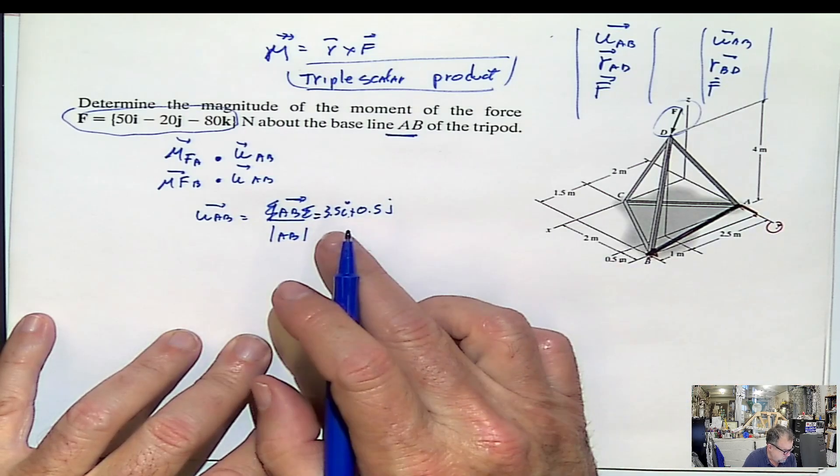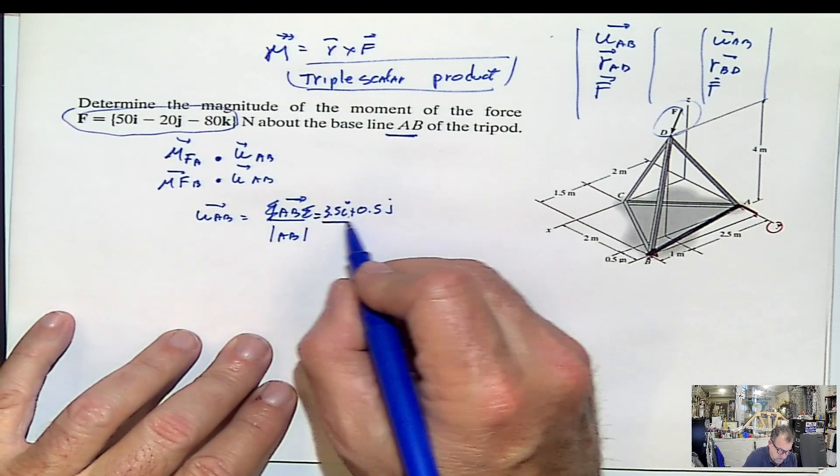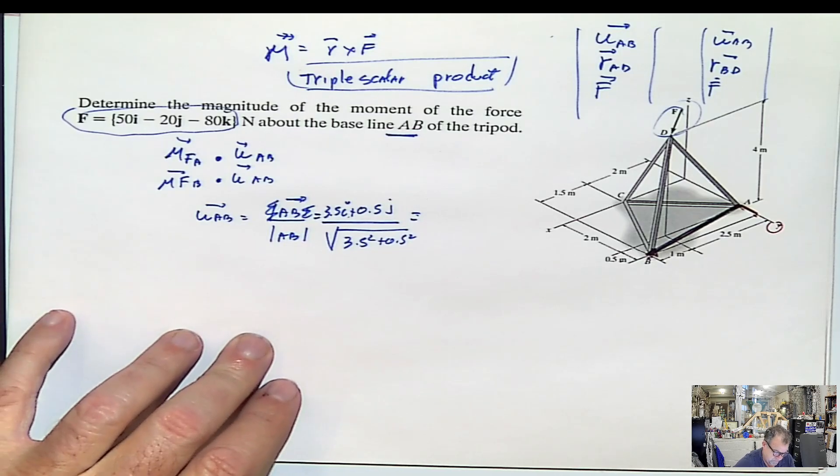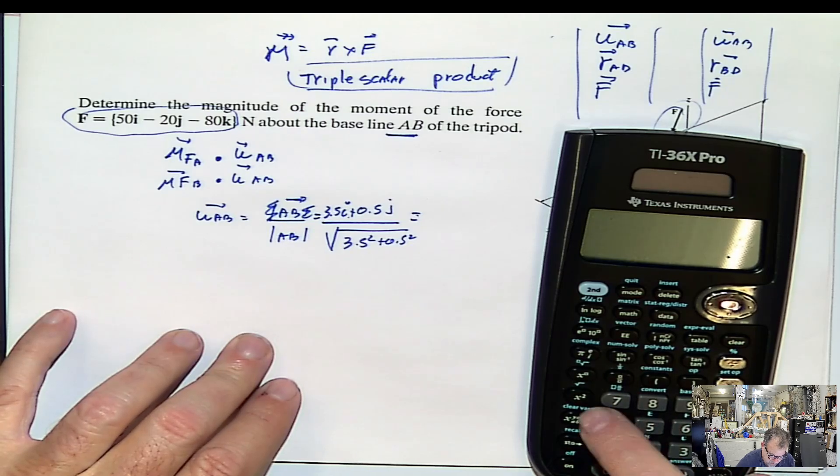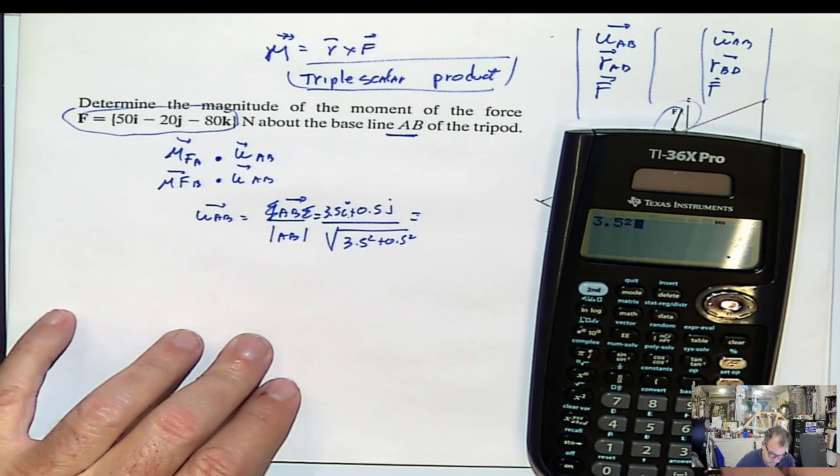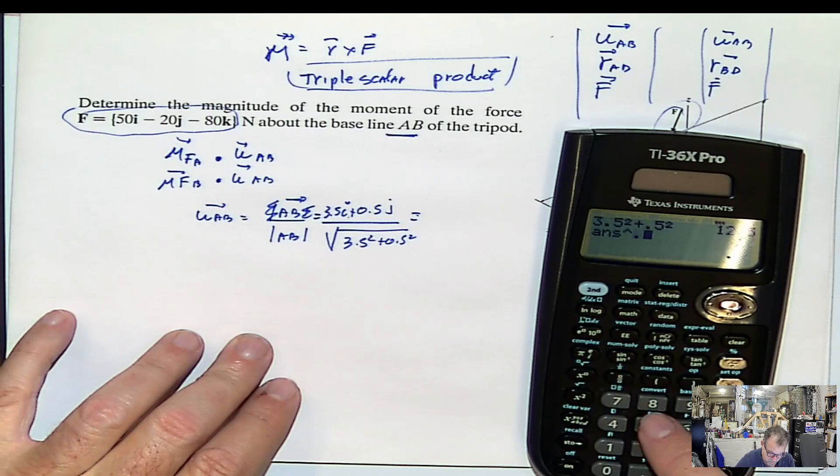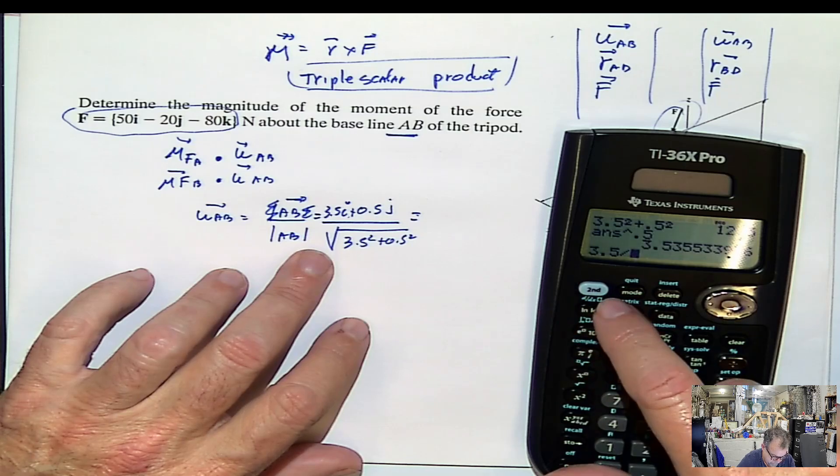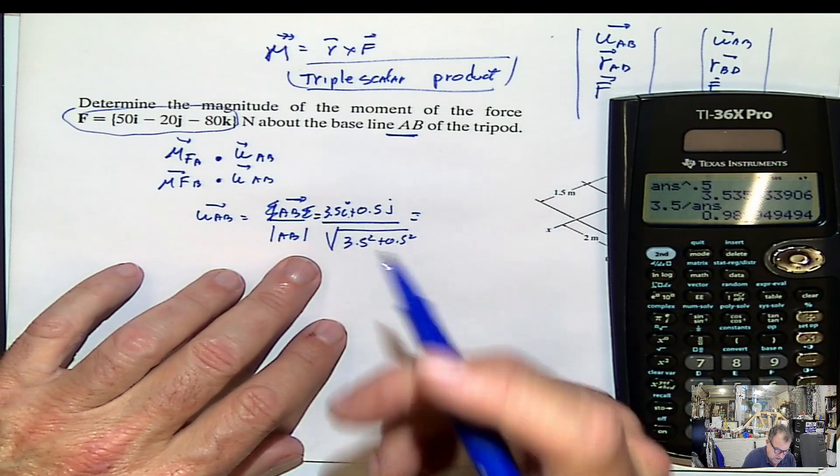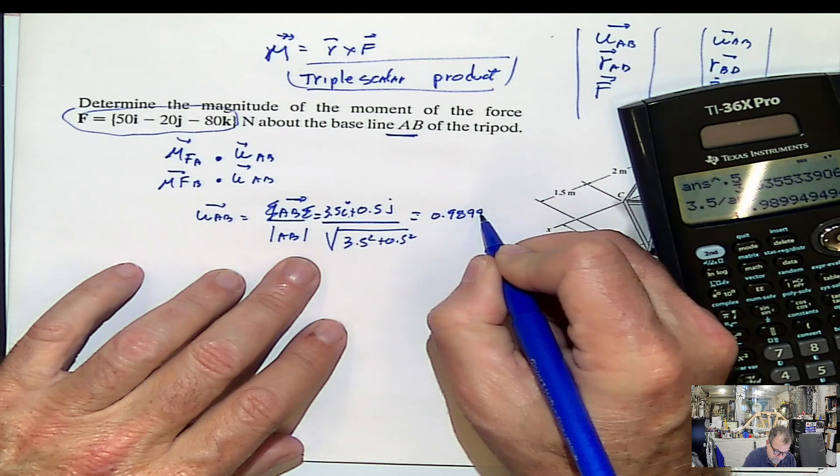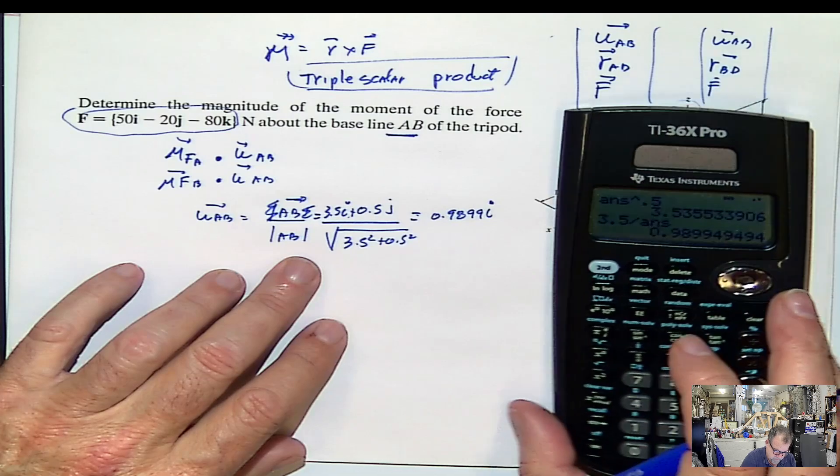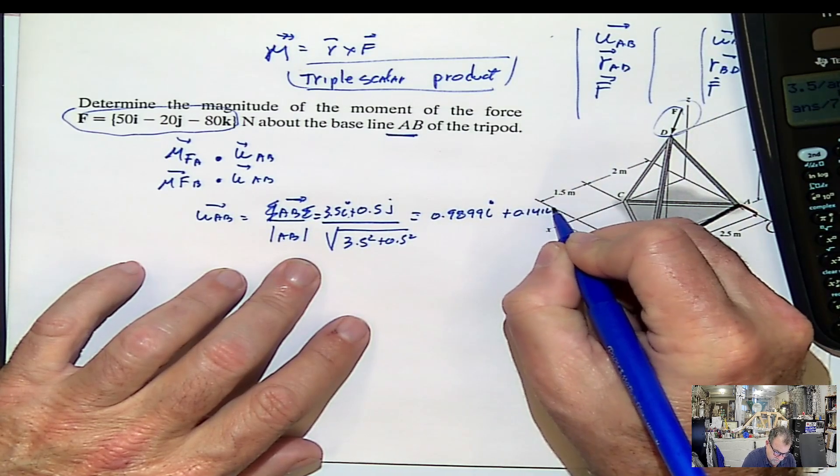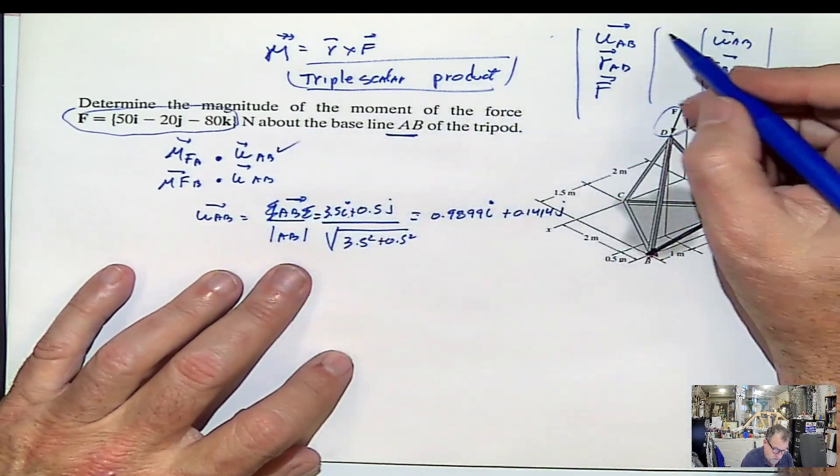So we have the unit vector AB divided by the magnitude of AB. That would be the unit vector, which is 3.5 square plus 0.5 square, elevated to the 0.5. That's the denominator. 3.5 divided by that number, 0.9899 I, and 0.1414 J. OK, now we know this, or we know this, which is the same.